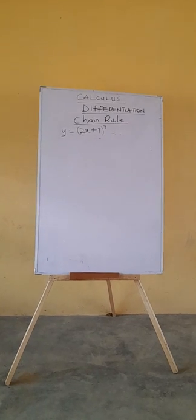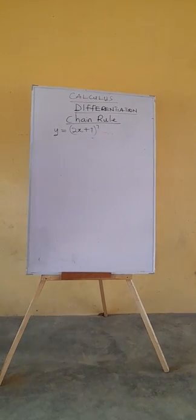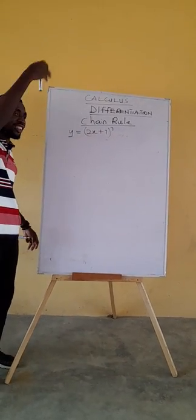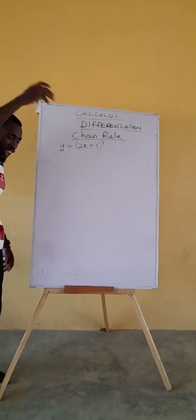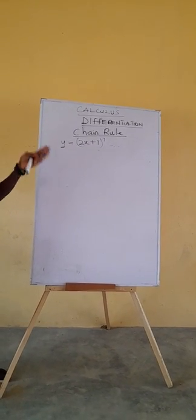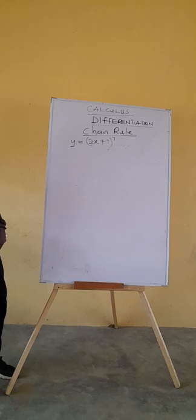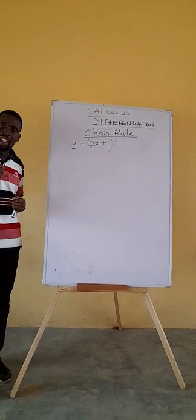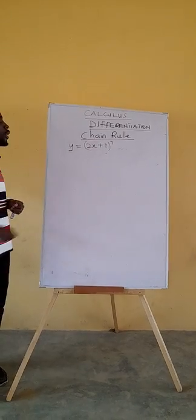There is another example on the board. Some people will try to expand (2x + 7)^7. Before you finish expanding, then you have exhausted your time. So that's the problem with that approach.